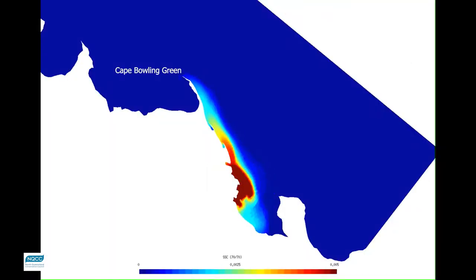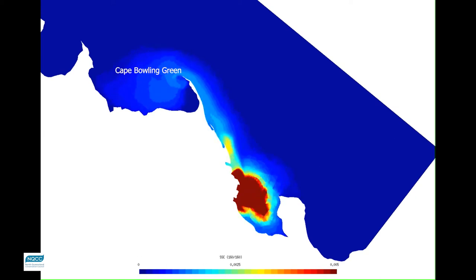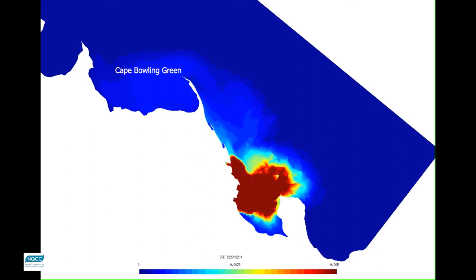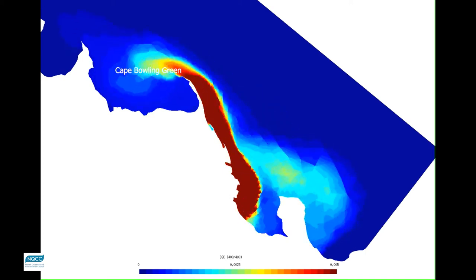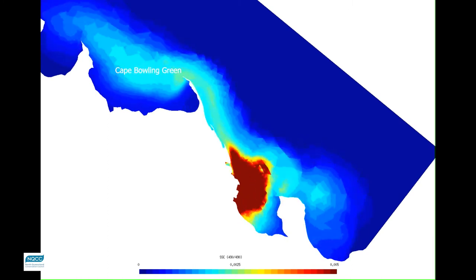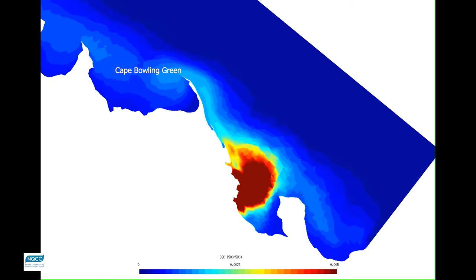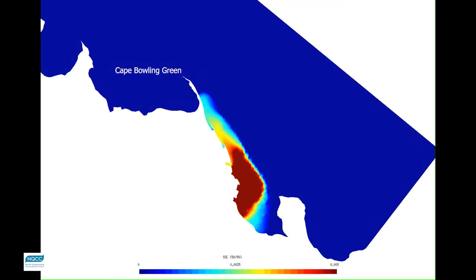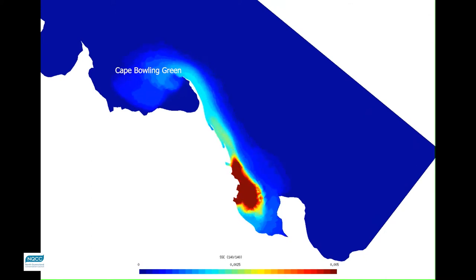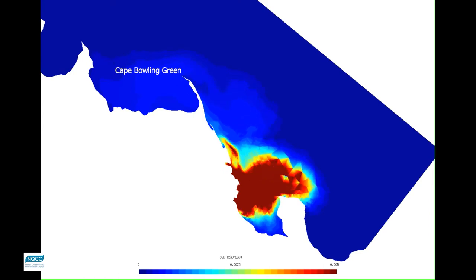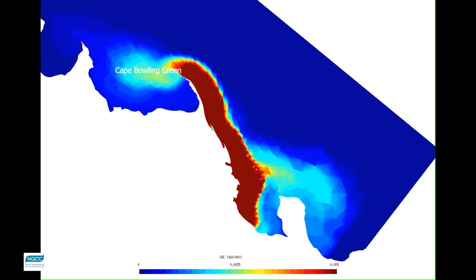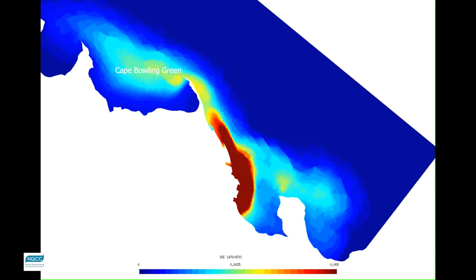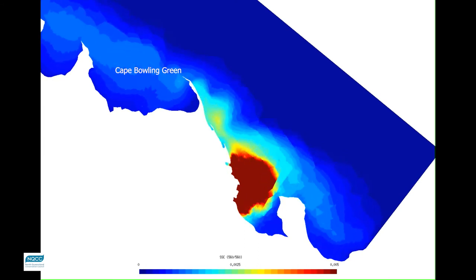Nearly all the fine sediment reaches the sea. This is the fate of the sediment: it comes in the plume, but of course it falls out of suspension. About 67 percent of the fine sediment — this is a plot of the suspended sediment concentration showing how much mud is in the plume — will actually settle in Upstart Bay, and the rest will be exported during floods and also cyclones.